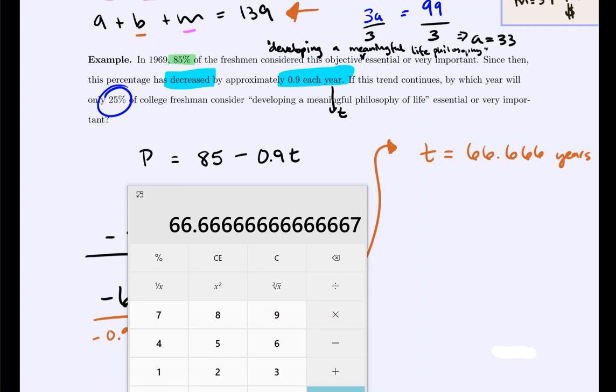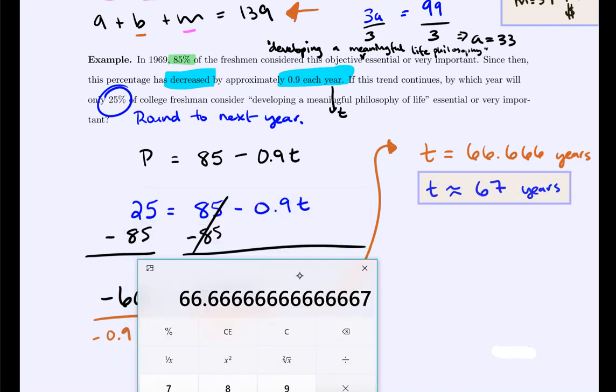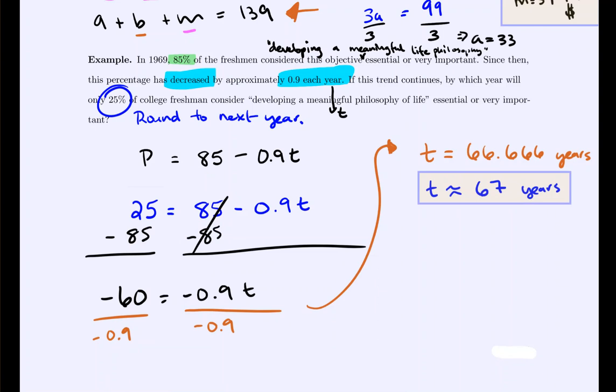And we would get t equals 66.666 years. Now, in this case, this problem I should have written round to next year. Because whenever we talk about years, we don't like to talk about years as in 0.66 years, right? We either say 66 or 67. So if we're asked to round to next year, then our final answer would be 67 years. So after 67 years, we would expect 25% if the trend continues of students to consider developing a meaningful philosophy important.